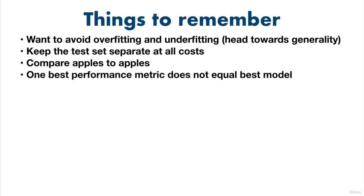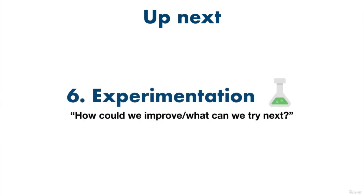Finally, one best performance metric does not equal the best model. You may be optimizing for prediction time, so although a model that predicts faster doesn't get as high accuracy as another model that takes a little bit longer, it might not matter because you need something that can predict as fast as possible. That was a lot, but we'll see plenty more of this in action throughout the course. Let's push on to the next step and see how we can put all of this together in step six, experimentation.